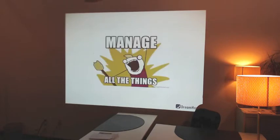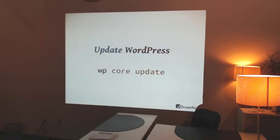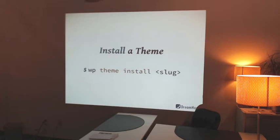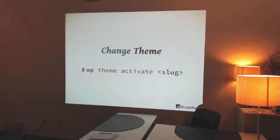You can manage all the things about WordPress with WP-CLI. The first thing you can do is update core directly by typing 'wp core update' from the directory and hitting enter — and your WordPress is up to date. If you want to install a theme, 'wp theme install' plus the slug of the theme will download it from the theme repo and automatically install it. It also accepts a zip file. You can then activate a theme with 'wp theme activate' and the slug.